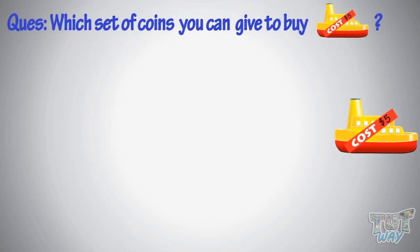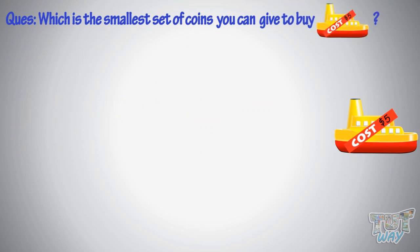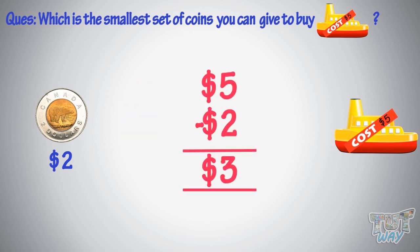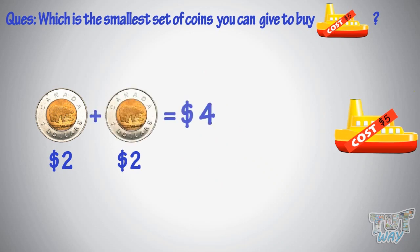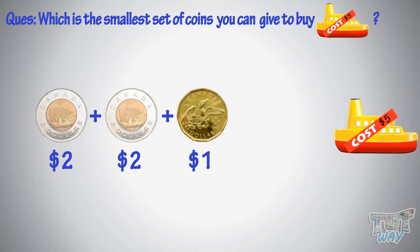Now, which is the smallest set of coins you can give to buy this toy? The biggest coin you know is a toonie, $2, so take out one toonie first. It is $2 now. How much more money do you need? You need three more dollars, so take out one more toonie. Now you have $4. How much more money do you need? You need one dollar, so take out one loonie. Two toonies and one loonie to pay for this toy. Good!